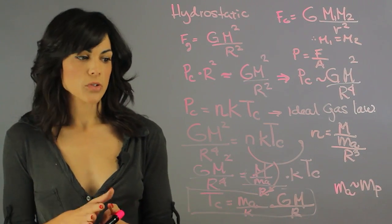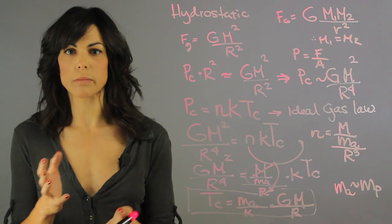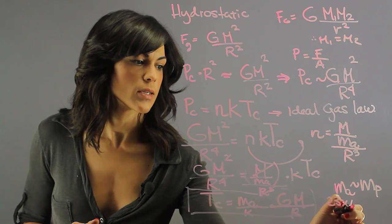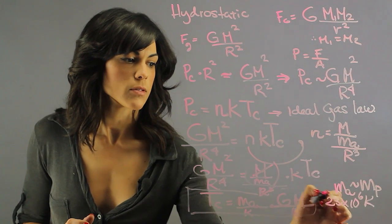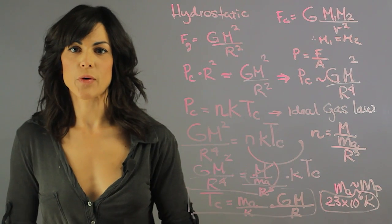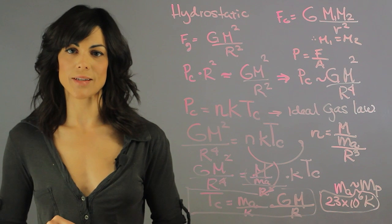So if you plug in all these numbers, you'll get that the actual temperature of the core is about 23 million kelvins. So 23 times 10 to the 6 kelvins. And this is how we figure out the temperature of the core. My name is Aileen Perez, I'm an astrophysicist, and this is how hot is the core of the Sun.